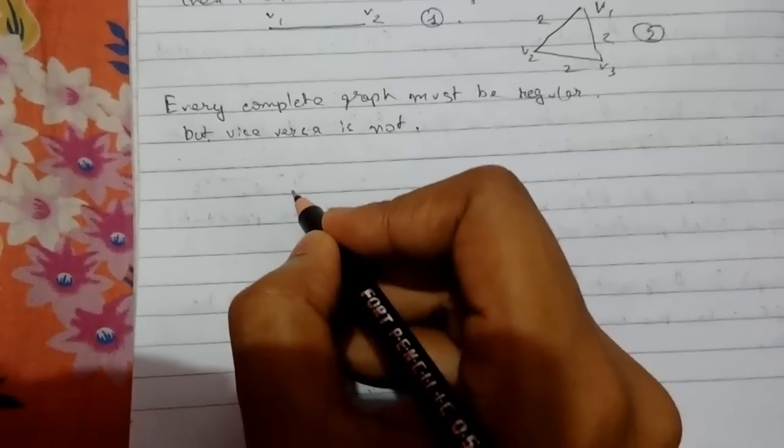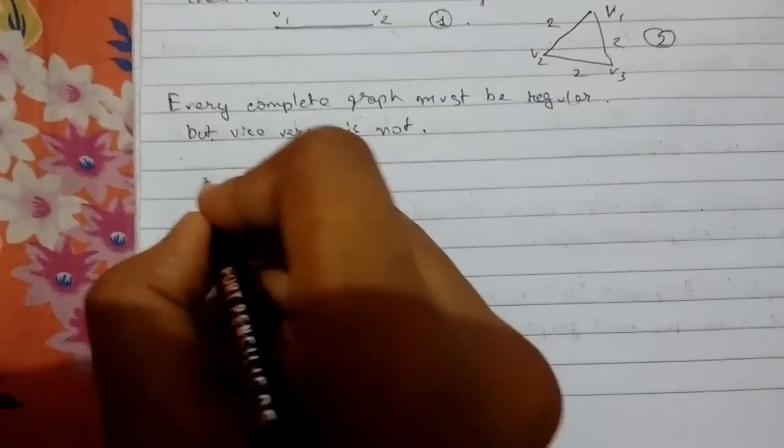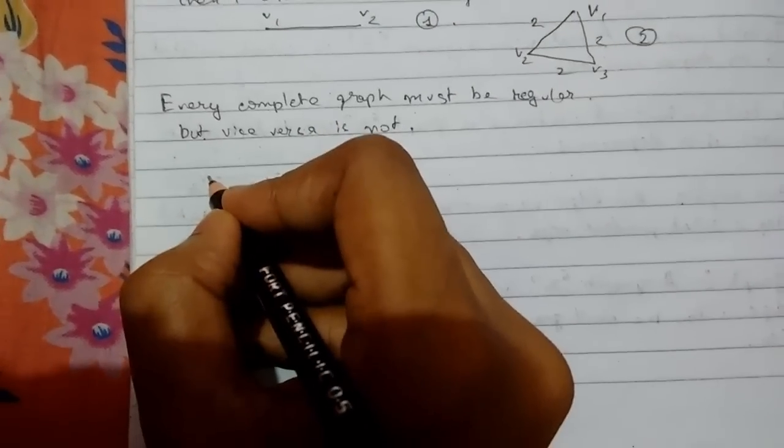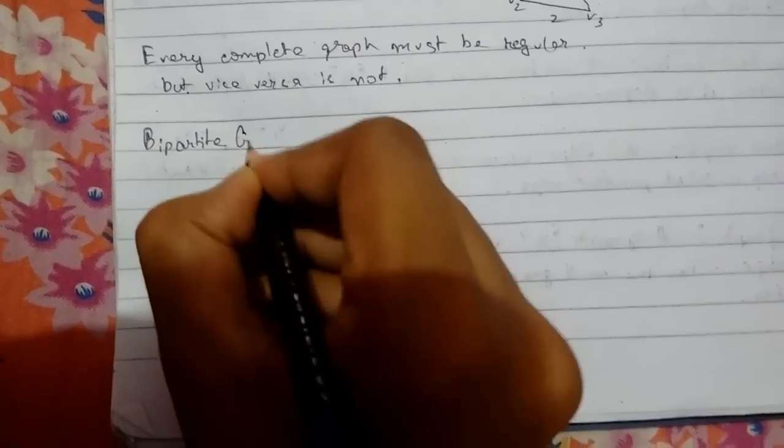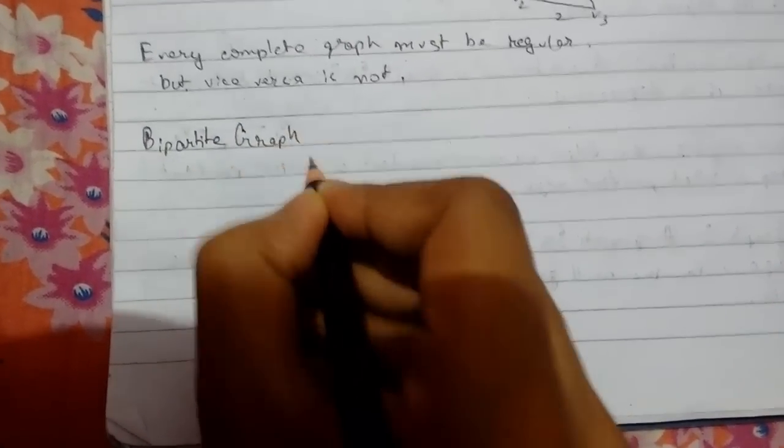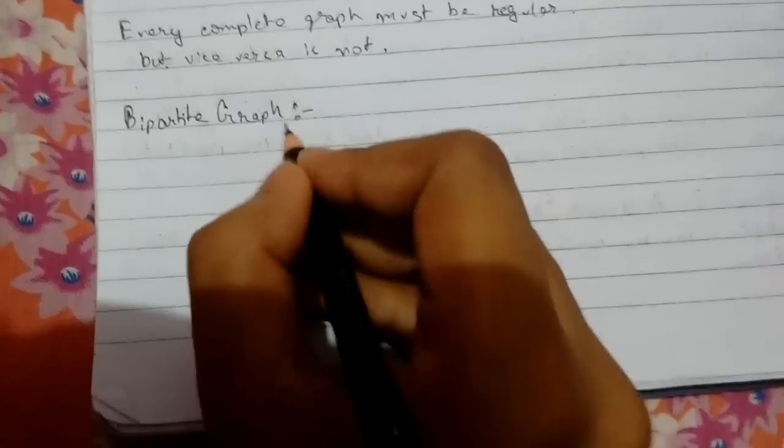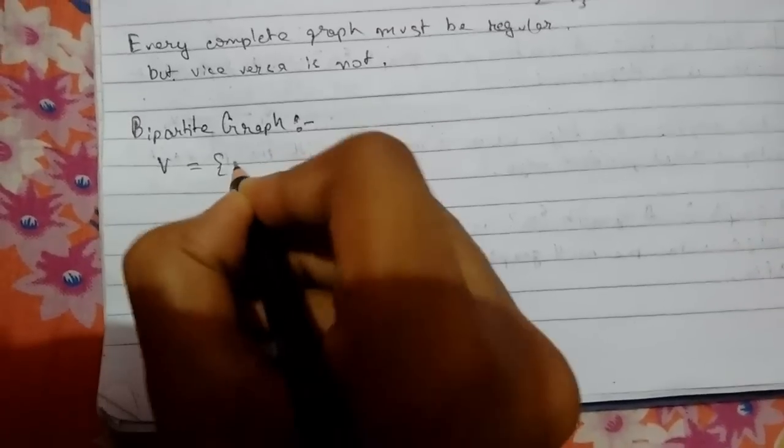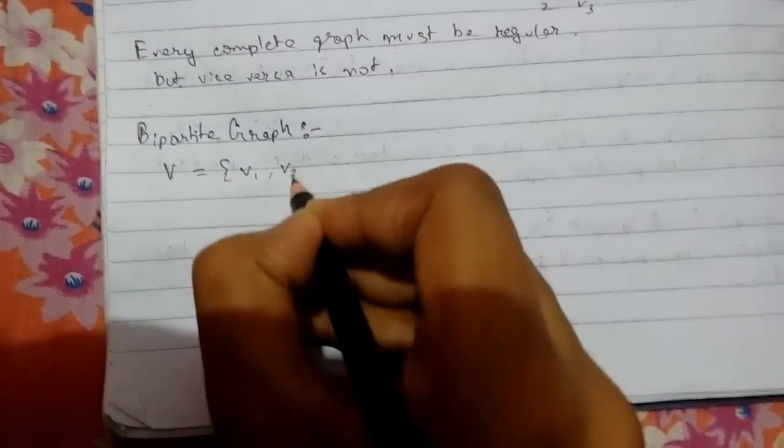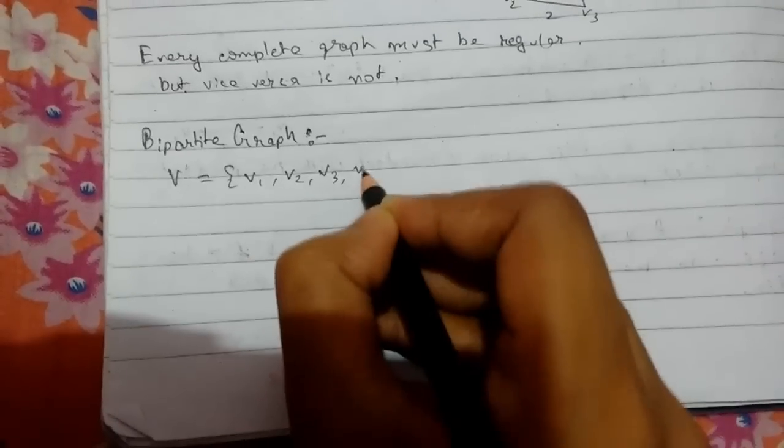Welcome back guys, today we'll be continuing graph theory. We'll be learning about bipartite graphs. Let me first draw the graph. Suppose the vertices are v1, v2, v3, v4.